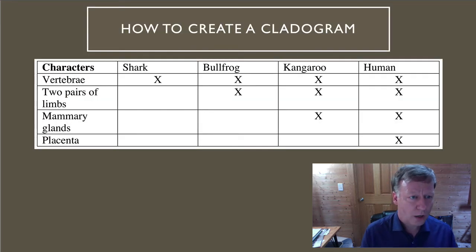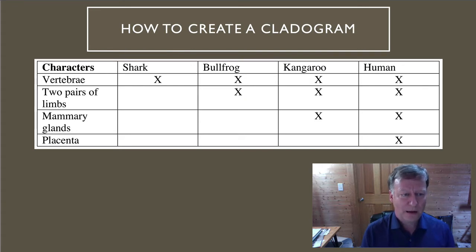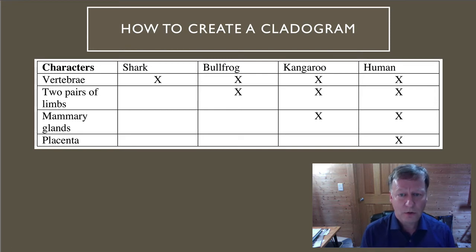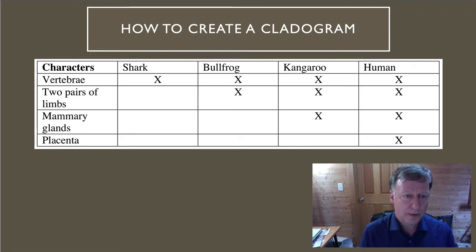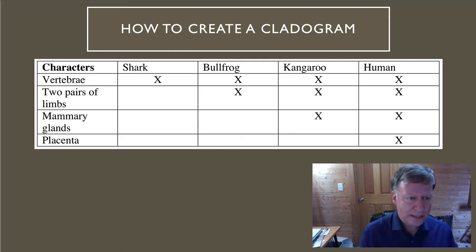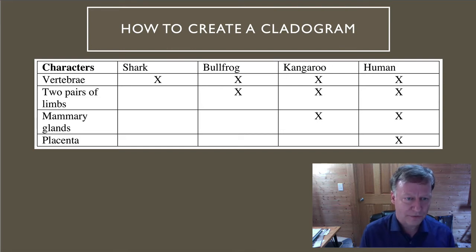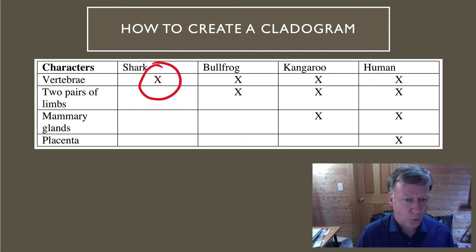So how do we draw a cladogram? To draw a cladogram, you need data. For example, we have some data about characteristics for four different species: sharks, bullfrogs, kangaroos, and humans. These four species have some of these characteristics and don't have others, marked by an X indicating they have them. When you're going to draw a cladogram, the first and key step is to look at the different members and figure out who's most different. This group represents the out-group — the one most different from everyone else. In our case, it is the shark, which has only one characteristic in common with everyone else.